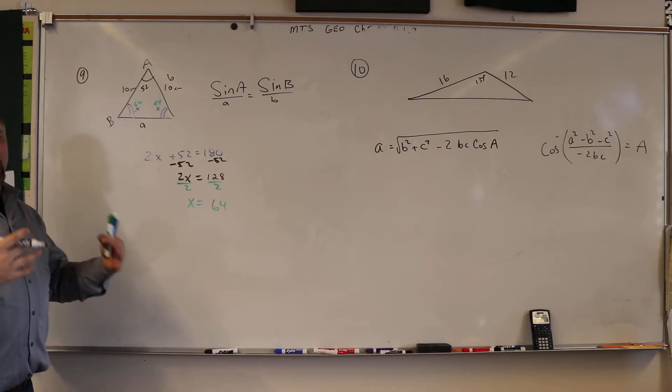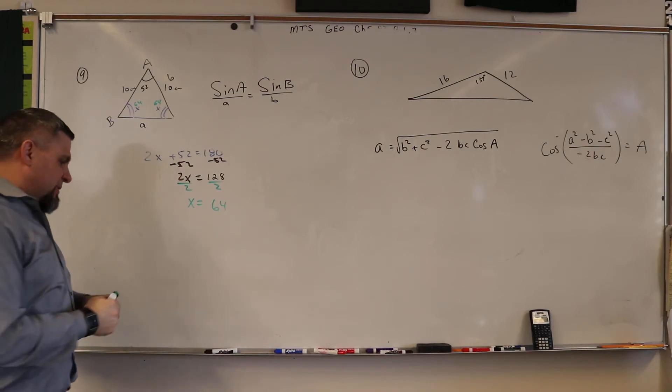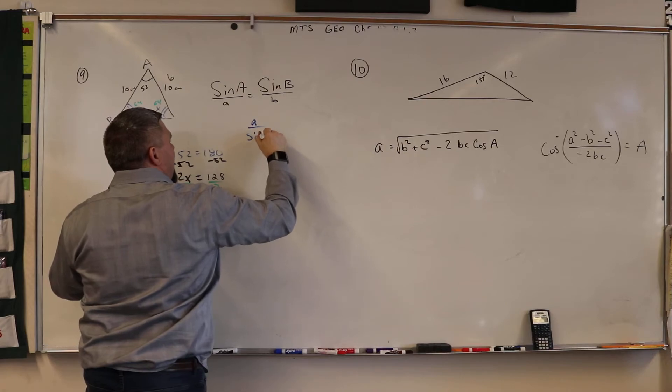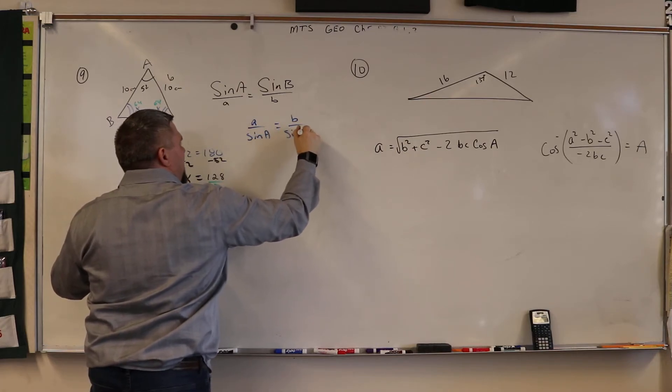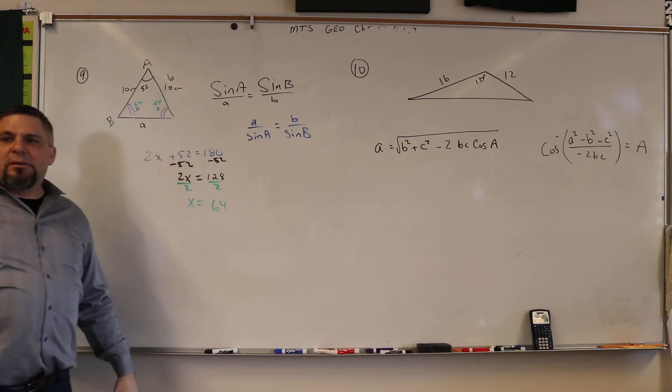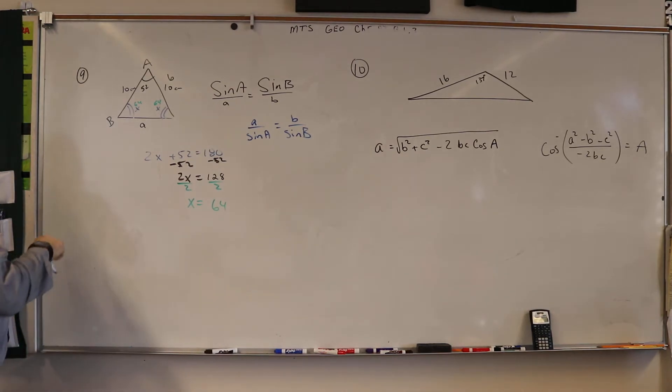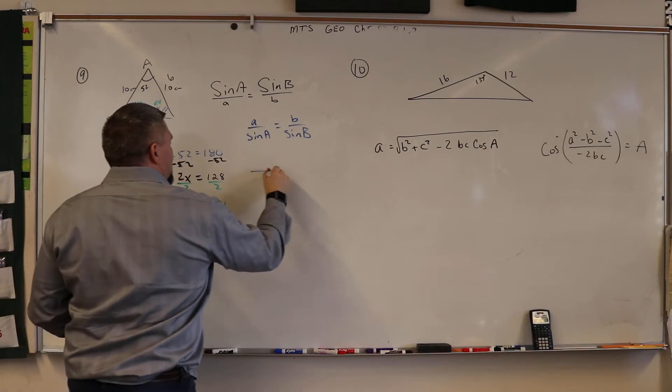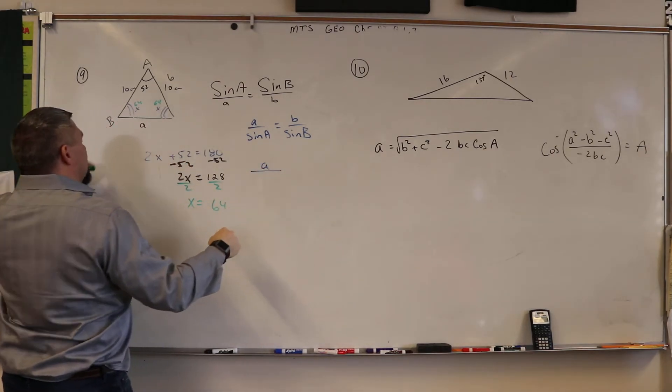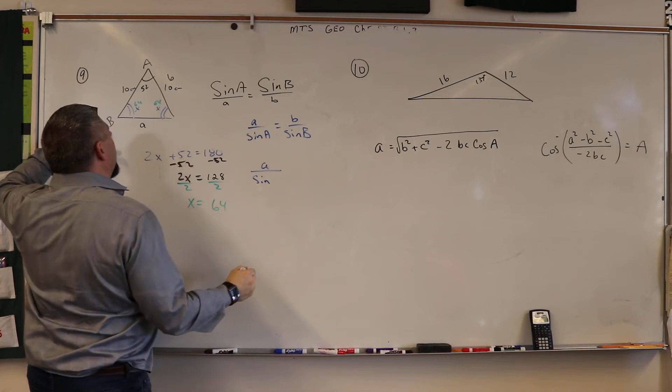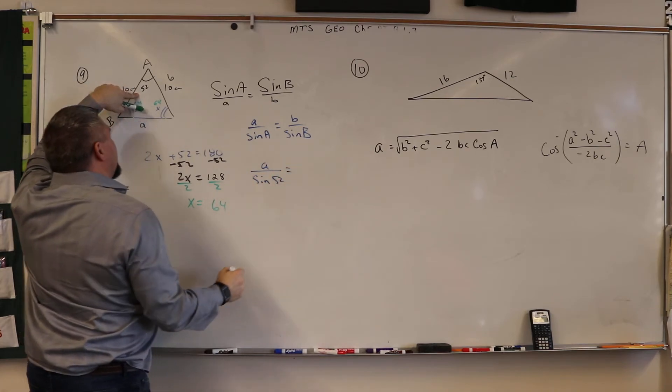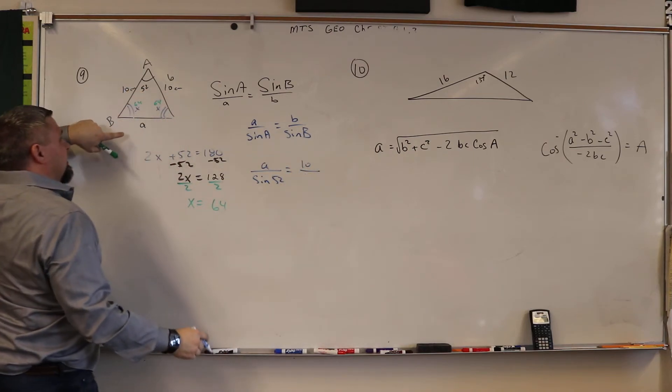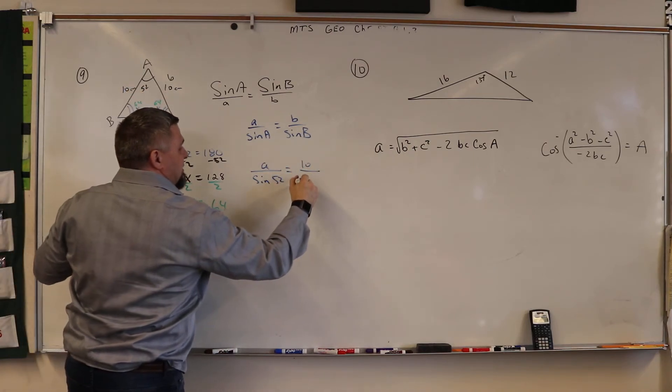So remember, sine a over a is equal to b over sine b. So all I have to do is now plug in the numbers: a over sine of angle a, which is 52, is equal to b over the sine of b, which is 64.